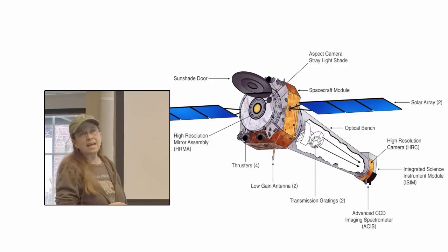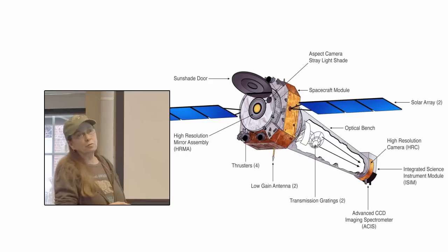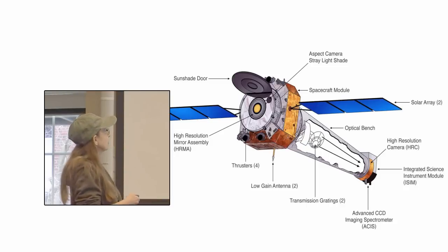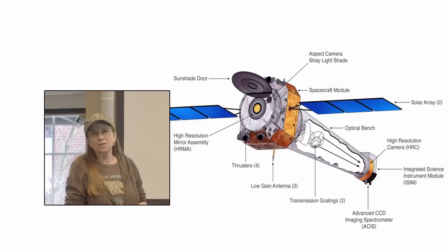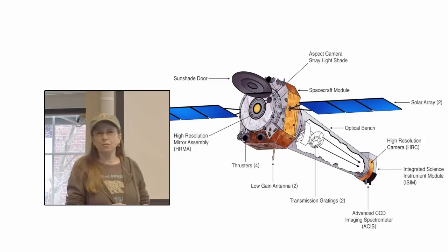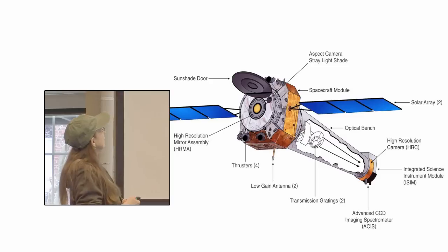Other than that, there are the solar arrays that produce the power to run the observatory, there are some thrusters to help position it, there are antennae for uploading commands and downloading data, and that is pretty much it.